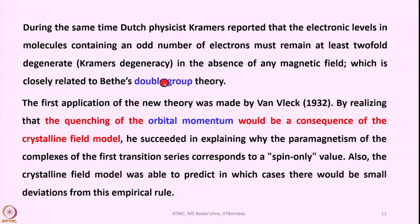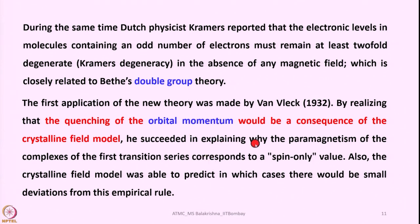Many physicists contributed significantly to crystal field theory, which appears almost perfect even today to explain literally everything about transition metal complexes. The first application of the new theory was made by Van Vleck in 1932, by realizing that the quenching of orbital momentum would be a consequence of the crystalline field model. He succeeded in explaining why the paramagnetism of complexes of the first transition series corresponds to a spin-only value.